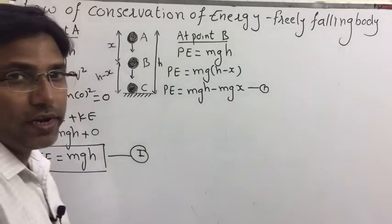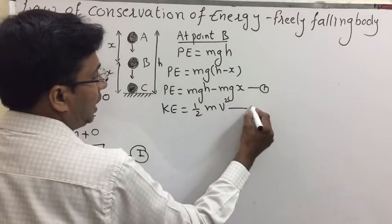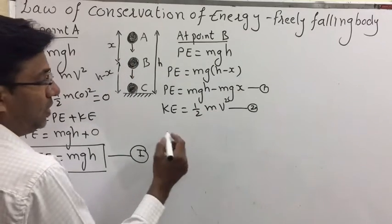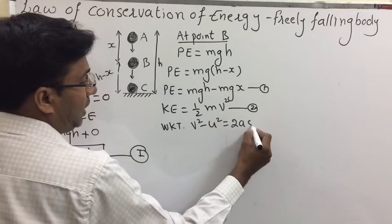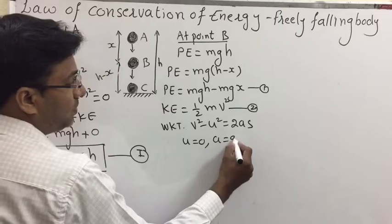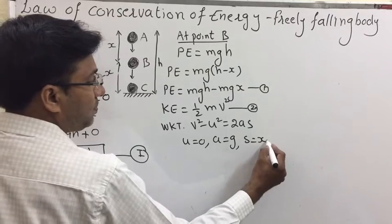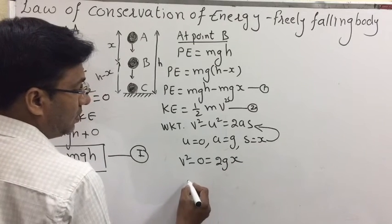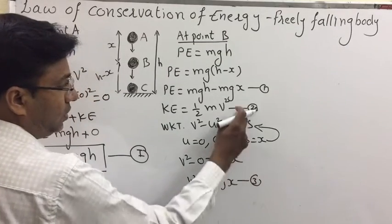Now find kinetic energy at point B, which is half mv squared. We don't know the velocity at point B, so we use the equation of motion: v squared minus u squared equals 2as. For a freely falling object, u equals zero, a equals g, and displacement from A to B is x. Substituting, we get v squared equals 2gx, which is equation number three.